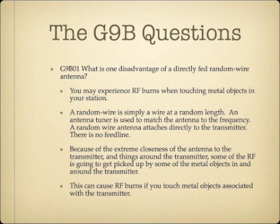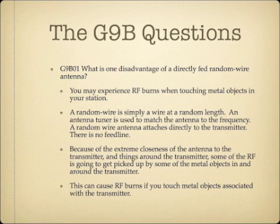The reason for this is the proximity of the antenna to the transmitter. A random wire antenna is simply a wire at a random length, and an antenna tuner is needed to match it to the frequency you want to transmit on. A random wire antenna attaches directly to the transmitter, so there's no feed line associated with it. Because of the extreme closeness of the antenna to the metal objects around your transmitter, some of the transmitted RF will be picked up by metal objects around your shack, and you can get RF burns if you touch them.